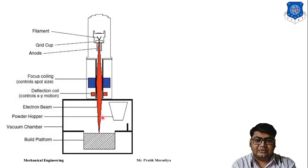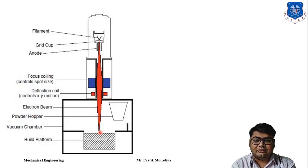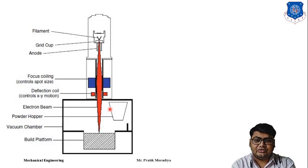All this arrangement will be inside a vacuum chamber. The electron beam will strike the build platform where a powder layer is present. Wherever the beam strikes, the powder will melt and solidify to produce a solid. In the area where the beam does not strike, the powder remains in powder form only. The powder hopper supplies the powder for the next layer. Once a layer solidifies, powder from the hopper is spread over the build platform and the beam again solidifies the desired area.